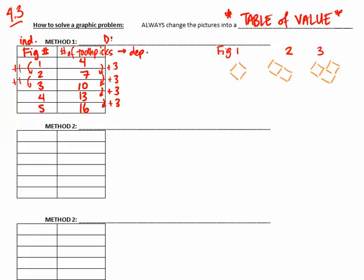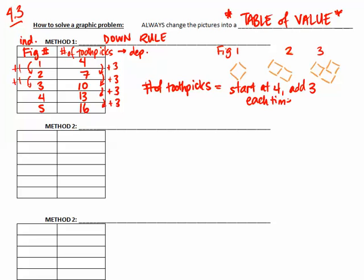Now, from this information, we can look at what we call the down rule. The down rule is the rule that shows the pattern. So the down rule for the number of toothpicks. So we would put the number of toothpicks equals start at 4. So we're starting at 4 and then with each successive figure number, we will add 3. And then start at 4, then add 3 toothpicks each time. So the total number of toothpicks equals start at 4 and then add 3 each time. So depending on the figure number, I'll have to add 3 several more times to get to that final answer.